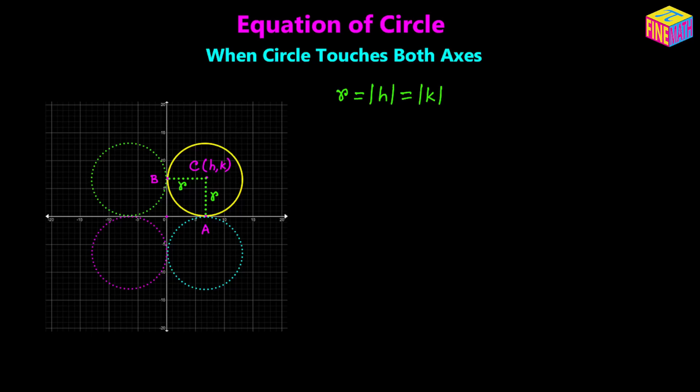As you can see in the diagram, the radius will be equal to the absolute value of h, and that will also be equal to the absolute value of k, since h could be positive or negative and similarly k could also be positive or negative. If we have to denote the value of the radius, then h is equal to plus or minus r, and similarly k is also equal to plus or minus r. Also, r squared will be equal to h squared, and that will also be equal to k squared.